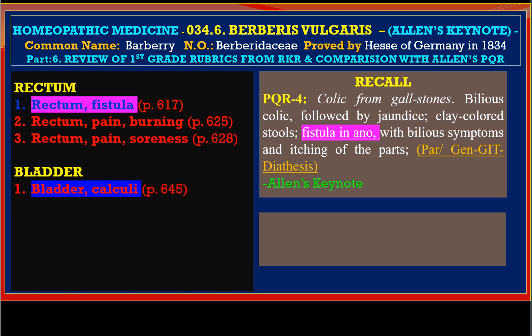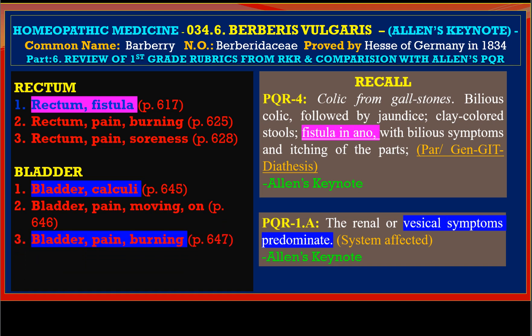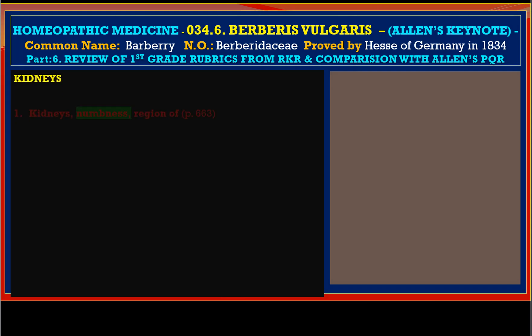In the bladder region we find bladder calculi, and for that we find PQR1A — renal or vesical symptoms predominant. All kinds of symptoms are present in the bladder, and bladder calculi are covered here in Kent first grade remedy representation. We also have bladder pain moving on, bladder pain burning — which represents cystitis basically — and bladder urging to urinate, with strangury.